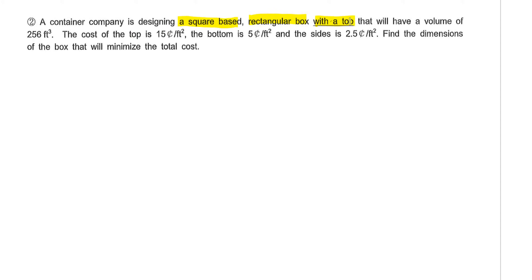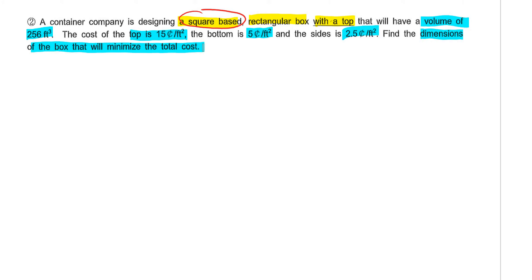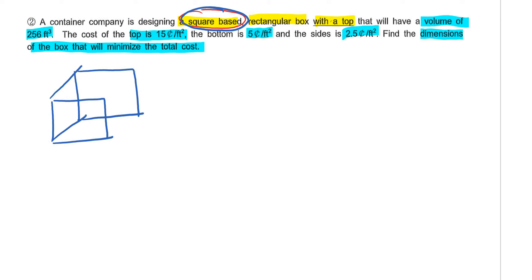This one is a little bit different — we do have a top for this particular problem, but it's still square-based. It's going to have a volume of 256 feet cubed. The cost of the top is 15 cents per feet squared, the bottom is 5 cents per feet squared, and the sides are 2.5 cents per feet squared. I want to find the dimensions of the box that will minimize the total cost. Since this is a square-based problem, the base length will be x, the base width will be x, and the height will be y.